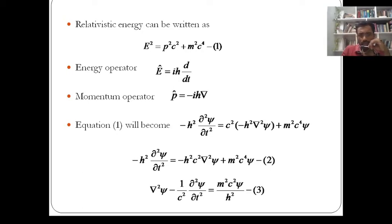Now, what I am going to do is divide the entire equation by ℏ²c², and bring the first term on the right-hand side to the left-hand side. So I can write the equation as ∇²ψ − (1/c²) ∂²ψ/∂t² = (m²c²/ℏ²)ψ.